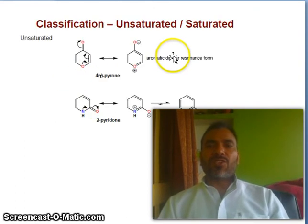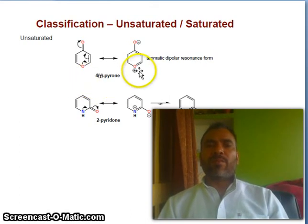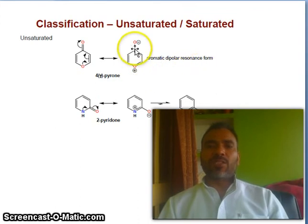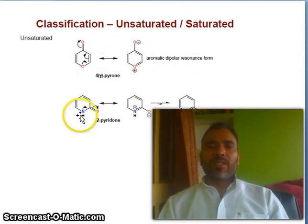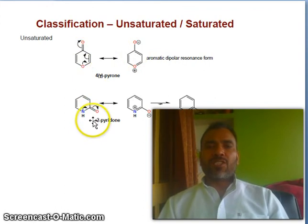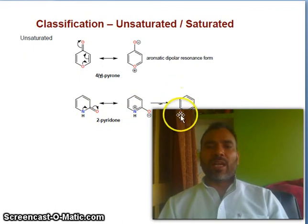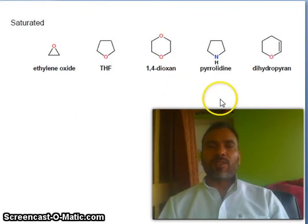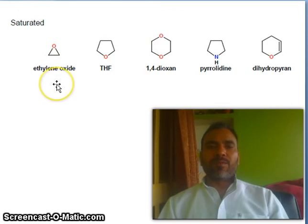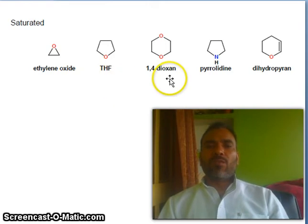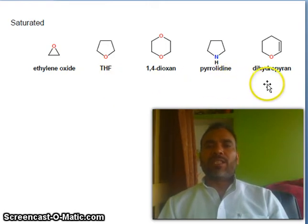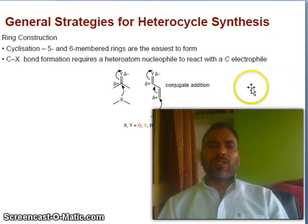Now classification — unsaturated and saturated. Unsaturated: you can see four-gamma pyrone at the four position — aromatic dipolar resonance form, this is positive, this is negative positive. If the position changes — NH, you know — two-pyridone, then this negative positive — and this is the main form. Saturated examples: ethylene oxide, THF (tetrahydrofuran), 1,4-dioxane, pyrrolidine, dihydropyran.